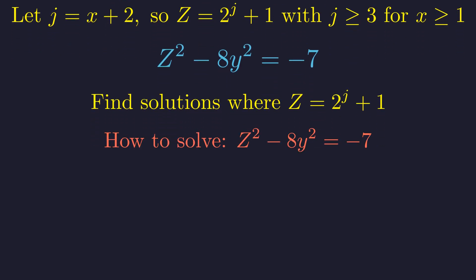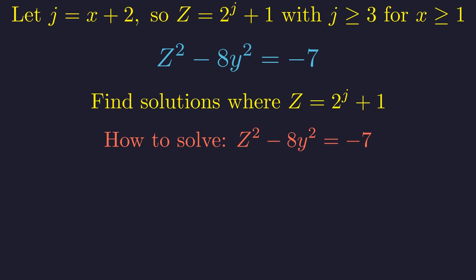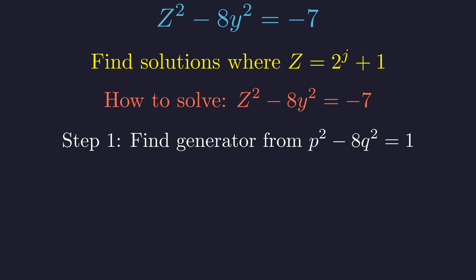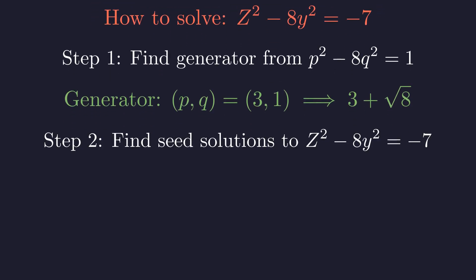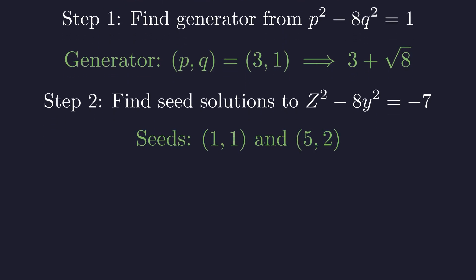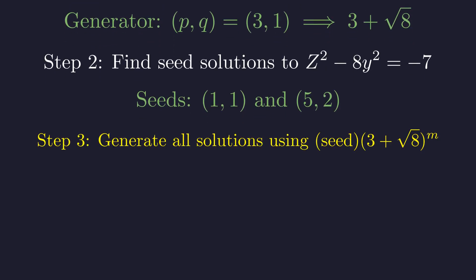To find all integer solutions to this equation, we can't just guess. We need the powerful machinery of Pell equations. First, we find the generator for all solutions from the related equation P squared minus 8q squared equals 1. The fundamental solution is 3, 1 giving us the algebraic unit 3 plus square root of 8. Next, we find the seed solutions to our actual equation by testing small values. By inspection, we find two seed solutions: 1, 1 and 5, 2. Every solution is found by starting with a seed and repeatedly multiplying by our generator.